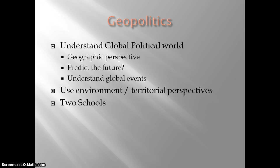Using environmental and territorial perspectives, we're not just looking at politicians but at the environment they find themselves in. What are the territorial gains and goals that states might have for each other? How can we use the proximity of states to each other, resources, and things like that to understand the events that are going on?